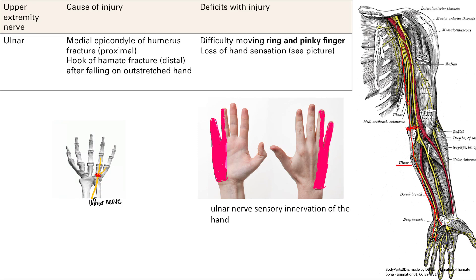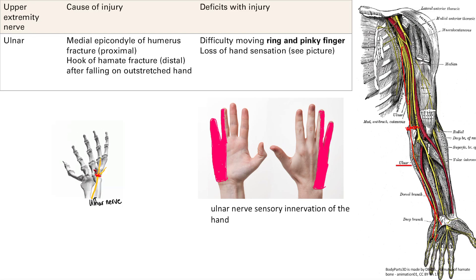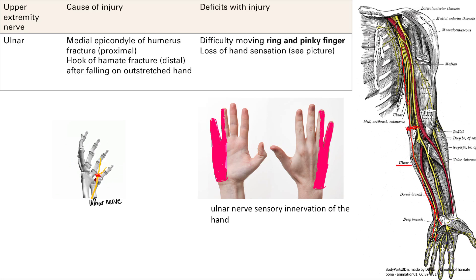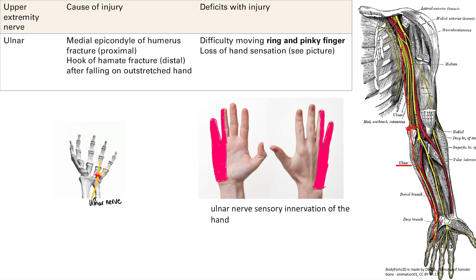Similar to the median nerve, but with the ulnar nerve it's going to be the ring and pinky finger that have difficulty moving. You'll see things like the ulnar claw. Just remember: difficulty moving the ring and pinky finger. For hand sensation, the ulnar nerve covers what the median and radial nerves don't — basically the pinky finger and half of the ring finger, on both sides of the hand.